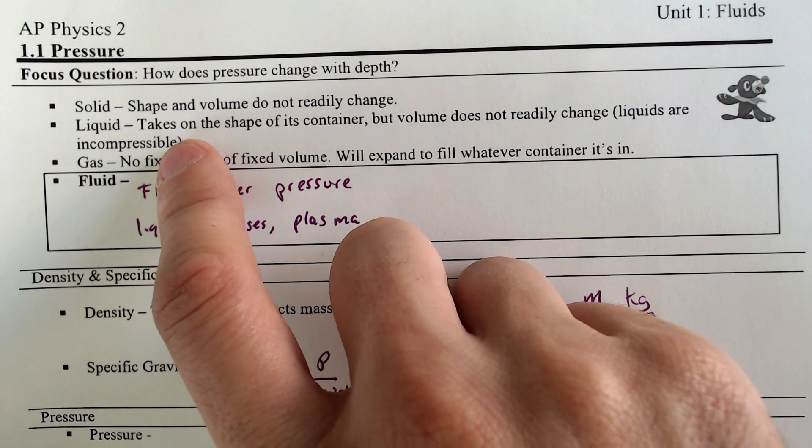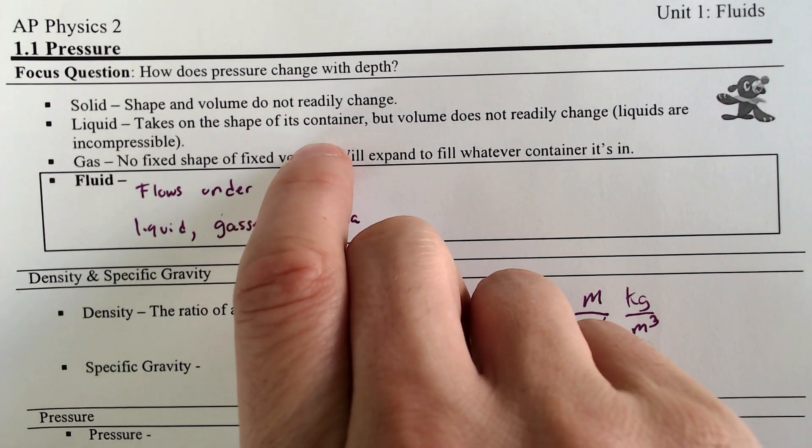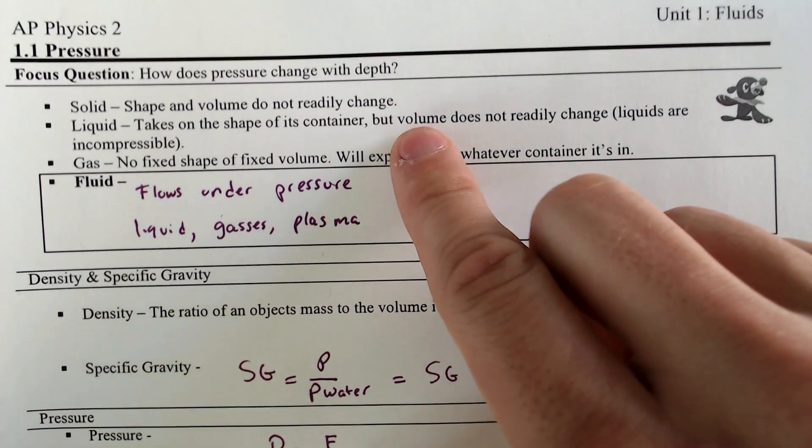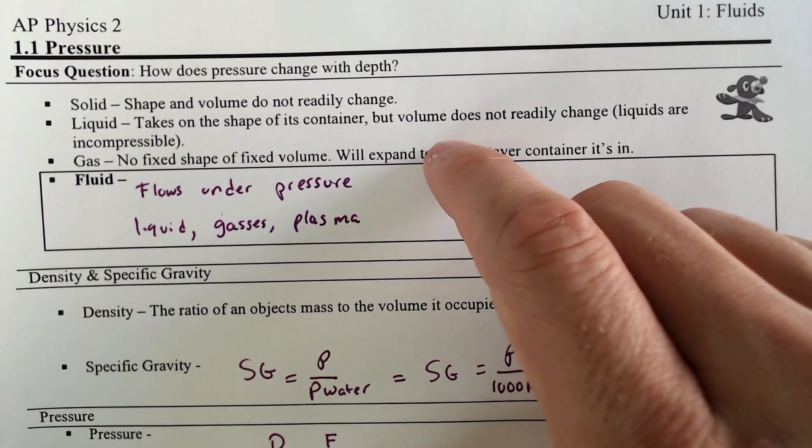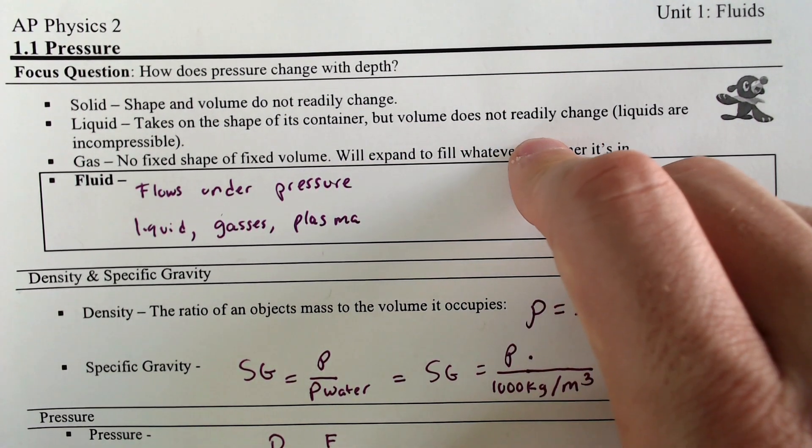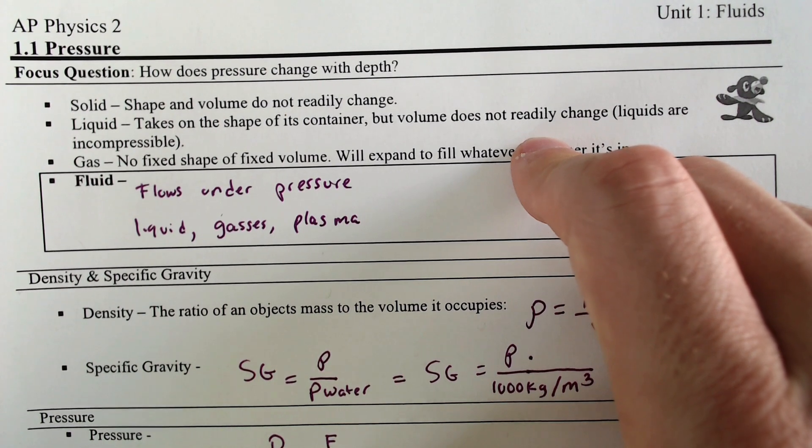A liquid is different because a liquid can take the shape of a container. You can pour a glass of water into any container and it will conform to that. But the volume of that liquid does not readily change. The volume of water stays the same regardless of what you pour it into.